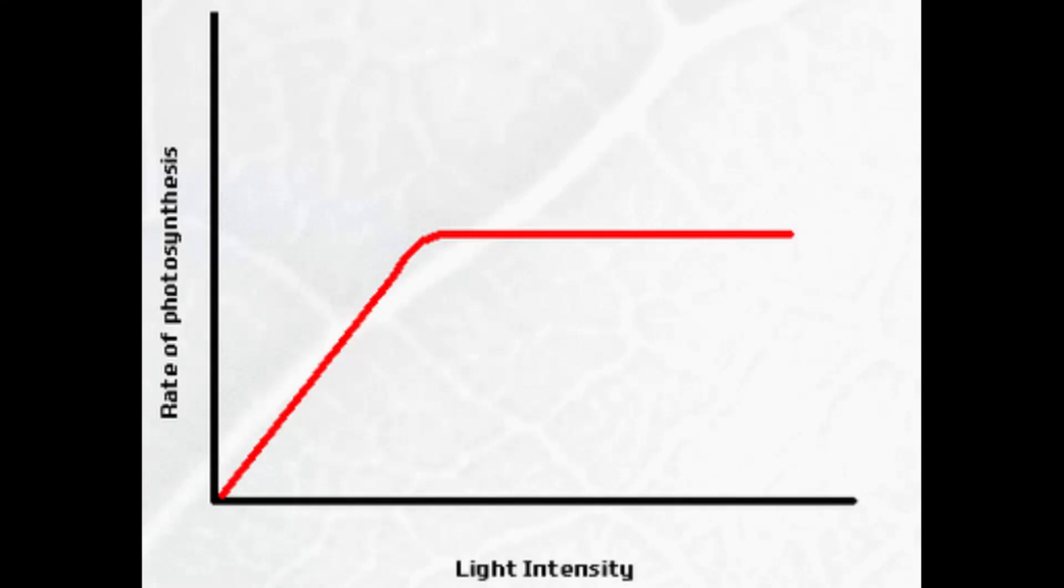In this experiment, we're going to be looking at the effect of light intensity on the rate of photosynthesis, and we're going to track this by counting the number of bubbles produced per minute, i.e., the rate.